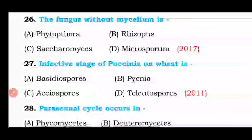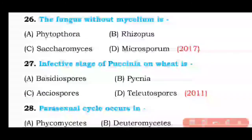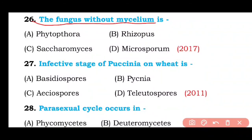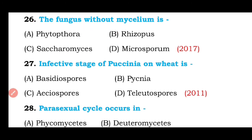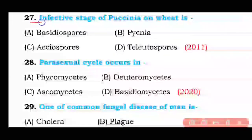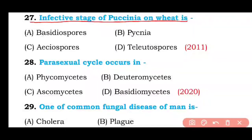Question number twenty-six: The fungus that is without mycelium is Phytophthora, Rhizopus, Saccharomyces, or Microsporium? The correct answer is option C — Saccharomyces is a yeast and it is without mycelium.